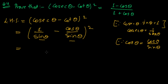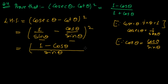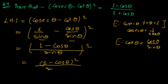Taking the common denominator as sine theta, it will be 1 minus cosine theta, whole square, divided by sine squared theta. So this is our left hand side — we get (1 minus cosθ)² / sin²θ as our left hand side.